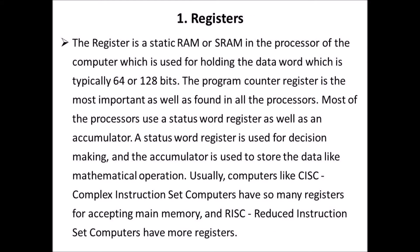First one: registers. The register is a static RAM or SRAM in the processor of the computer, which is used for holding data of typically 64 or 128 bits. The program counter register is the most important and is found in all processors. Most processors use a status register as well as an accumulator. A status register is used for decision making and the accumulator is used to store data like mathematical operation results.